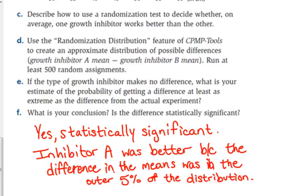So, when I ask you a question like that on the quiz, that's how you should respond to that. You need to tell me, yes, it is statistically significant or no, it's not. And the reason why is because the difference in the means either was or was not in the outer 5% of that histogram that you will be given.